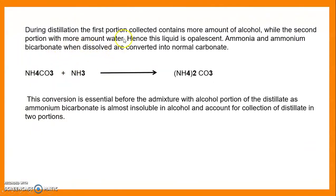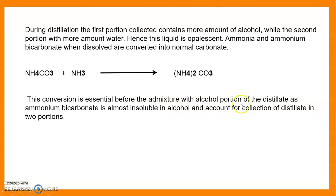During distillation, the first portion collected contains more alcohol while the second portion contains more water, because alcohol is more volatile in nature. This liquid opposite ammonia and ammonium bicarbonate, when dissolved, is converted into normal carbonate — ammonium carbonate. This conversion is essential before admixture with the alcohol portion of the distillate, as ammonium bicarbonate is almost insoluble in alcohol.